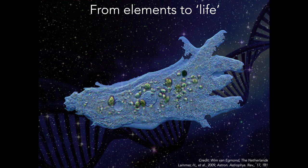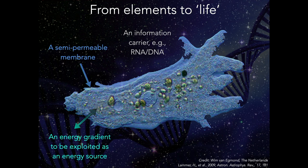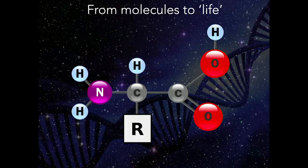How do we go from key elements formed through the stellar life cycle to life itself? As an astrochemist thinking about what a cell needs to be alive: a semi-permeable membrane, an energy gradient to exploit, and an information carrier such as RNA or DNA. These are very difficult things to remotely sense outside the solar system, but the structures that create a cell — proteins, lipids, and other macromolecular structures — are perhaps things we can try to remotely sense using astrophysical observations.